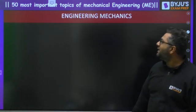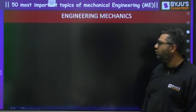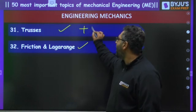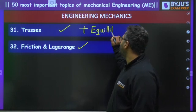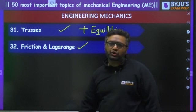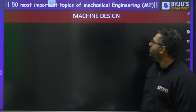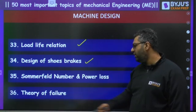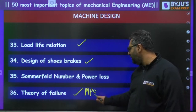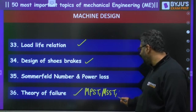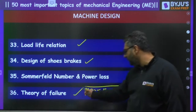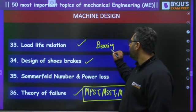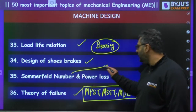Next subject is Engineering Mechanics — it is a fundamental one and is going to carry good marks. Trusses, friction, and Lami's theorem are the topics majorly asked here. Equilibrium questions often use Lami's theorem, which is an all-time favorite. Then Machine Design: majorly load-life relations for bearings, shoe brakes, Sommerfeld number for journal bearings, power loss, and theory of failure — MPST, MSST, and MDET — these three theories are very very important for the exam.